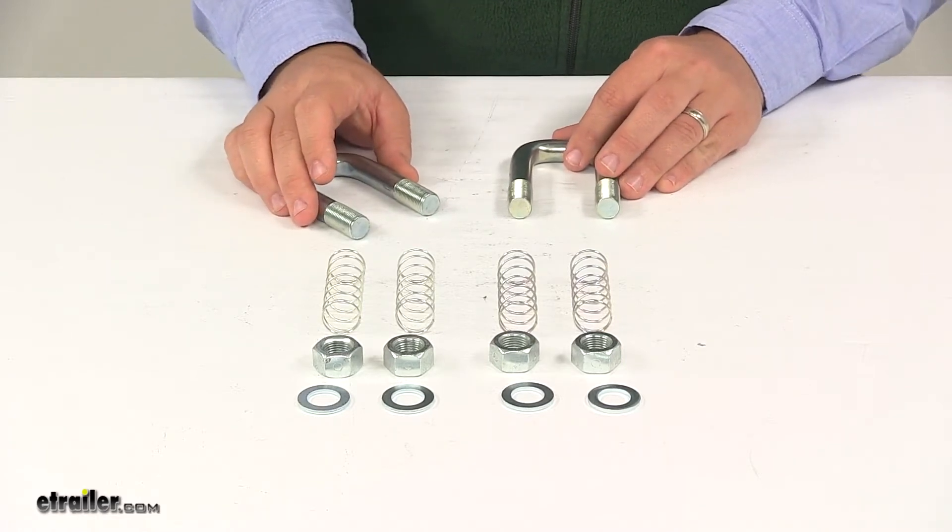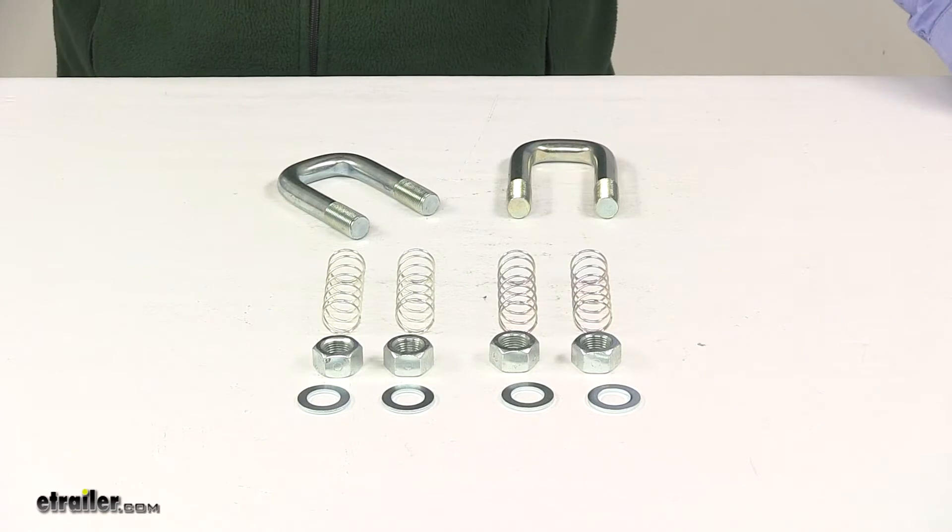That's going to do it for today's look at the replacement safety chain U-bolt kit for the Kurt Quick Goose 2 Gooseneck Hitch.